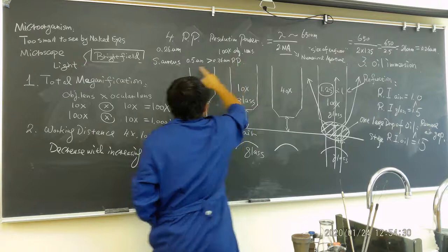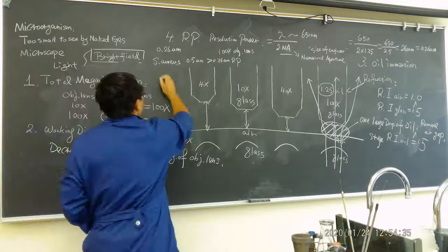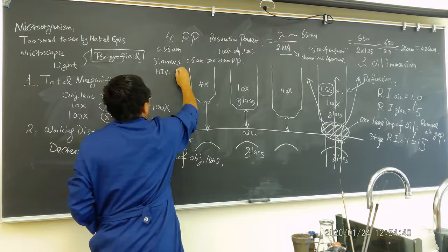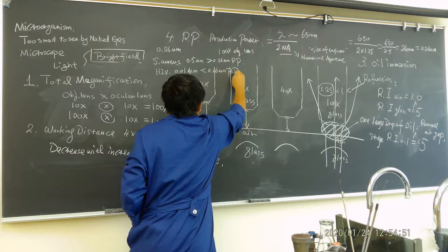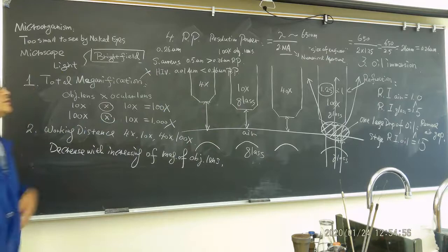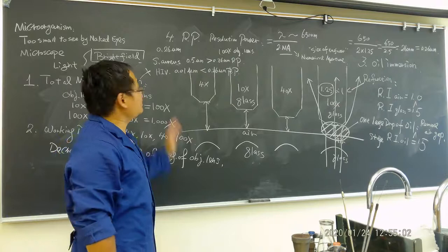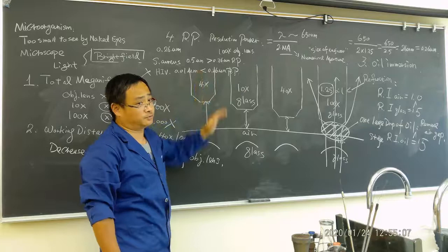But can we see a virus? Let's say HIV virus. The size is 0.01 micrometer. This is smaller than 0.26 micrometer of the resolution power. So we cannot do the observation using light field microscope because the resolution power is larger than the size. So anything which is larger than 0.26 micrometer we can use light field microscope to do the observation. Smaller than that, no, we cannot do it.